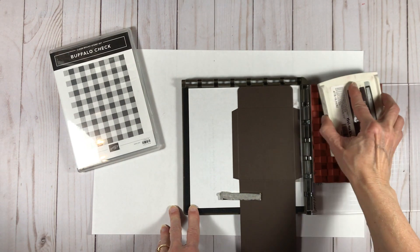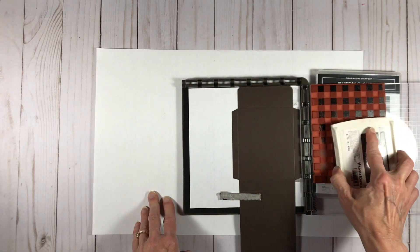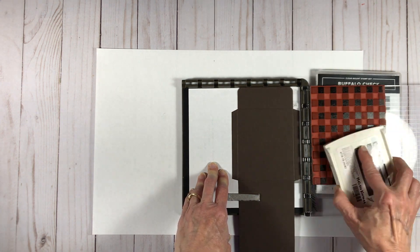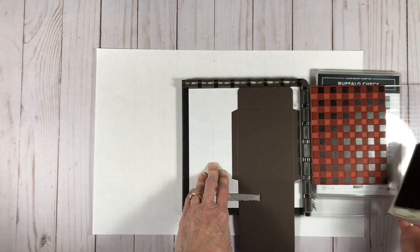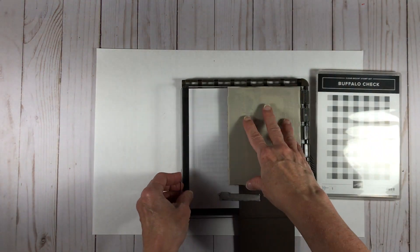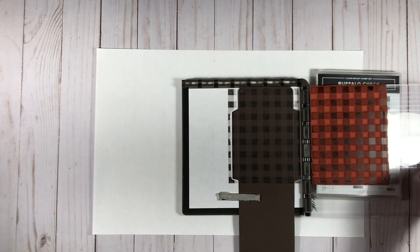So now I'm going to be stamping my Buffalo check image on the whole back side of the gift card holder. This is actually a different piece—I didn't actually put the tear and tape on this, but if I had it would have been on this back side on the two flaps on the back side.